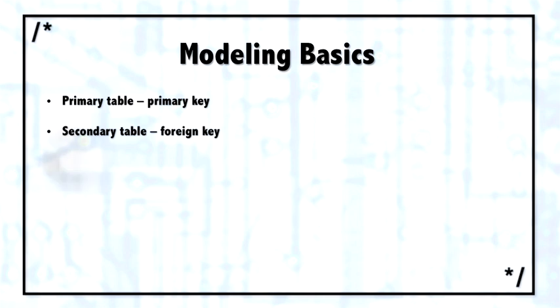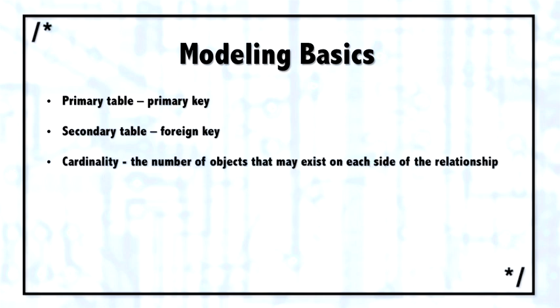Three other key terms. One is cardinality, which means how many objects can exist on each side of that relationship. For example, is it one to one, one to many? Cardinality is usually described as either zero, one, or many—zero, one, or infinity.